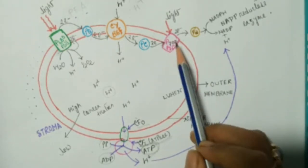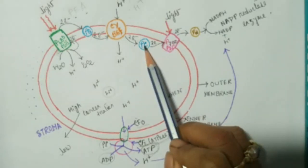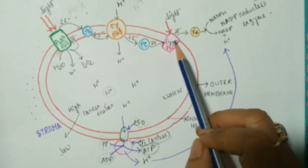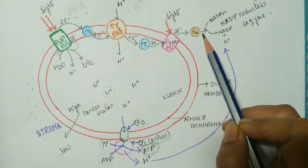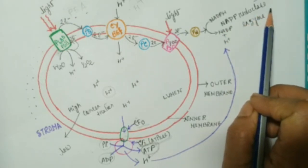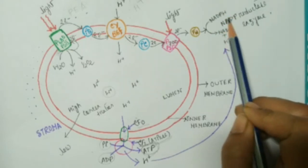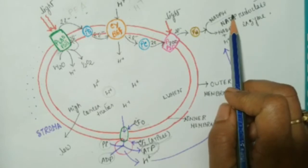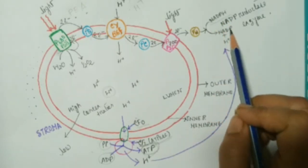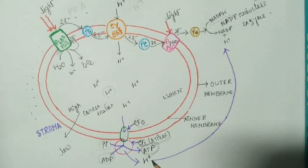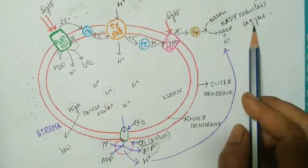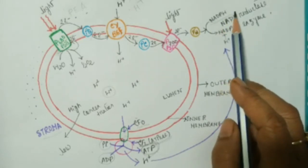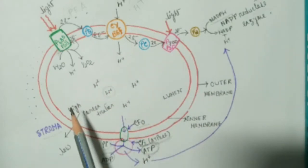Now for photosystem I: after the reaction center of photosystem I gets energy from plastocyanin, it becomes excited and transfers the electron to ferredoxin, which is another electron carrier. From ferredoxin, it goes to NADP reductase enzyme, where it reduces NADP into NADPH. Since this is a reduction reaction — meaning addition of hydrogen — the hydrogen released from the lumen to stroma is used by NADP reductase enzyme to reduce NADP to NADPH.